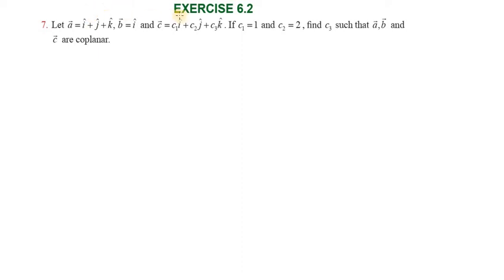Hi students, greetings from Success Education Academy. Exercise 6.2, question number seven. Three vectors: vector a, vector b, and vector c. Vector c has components c1 equal to 1 and c2 equal to 2. Find c3 such that vectors a, b, and c are coplanar.